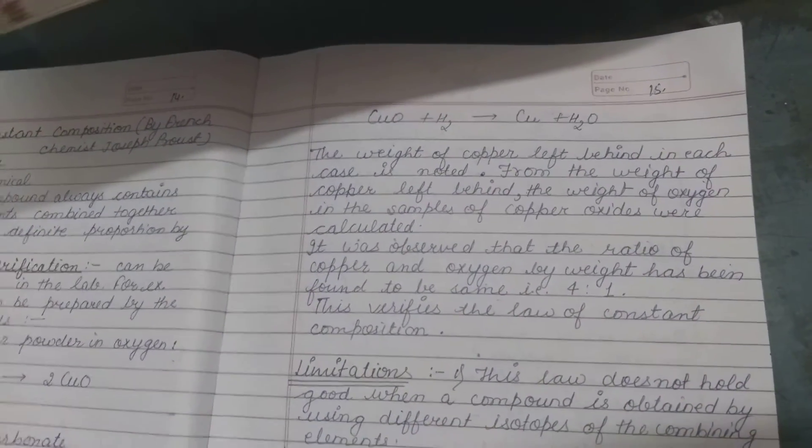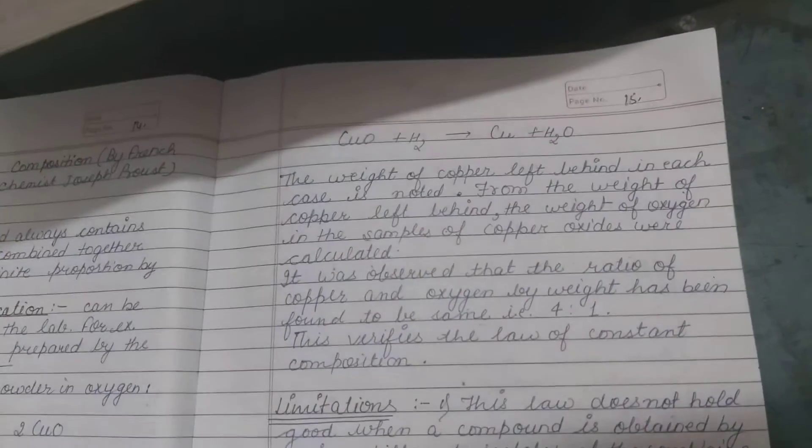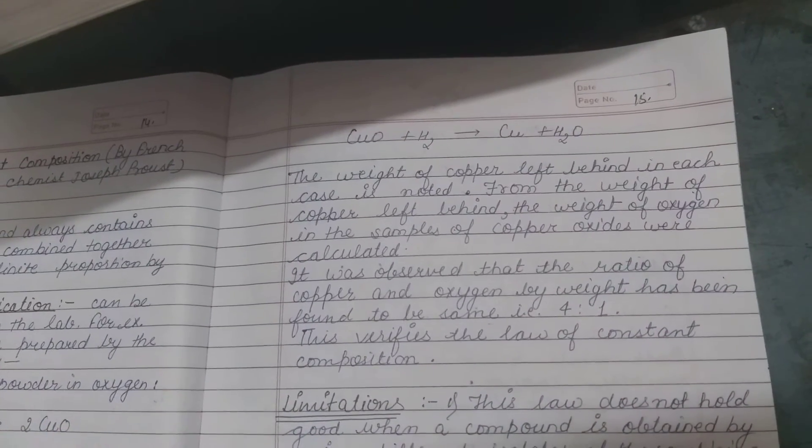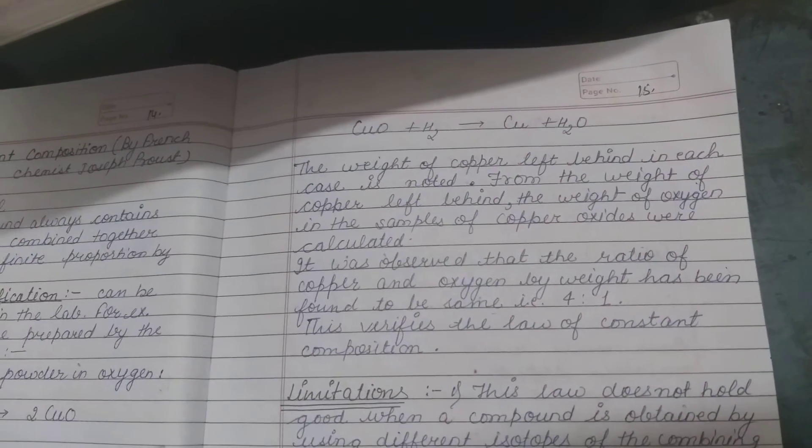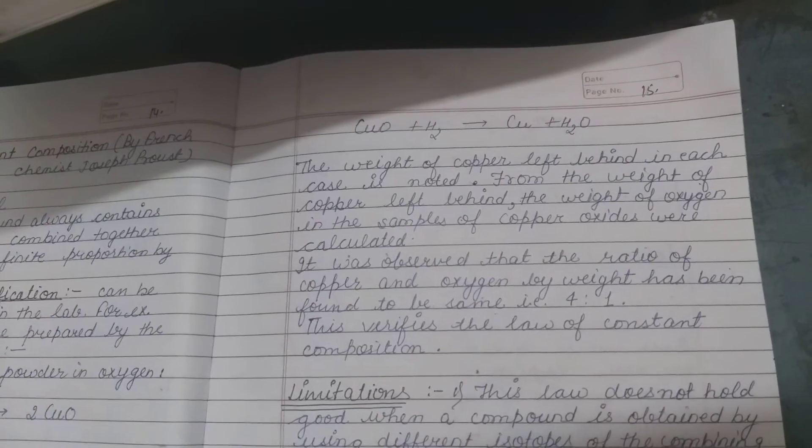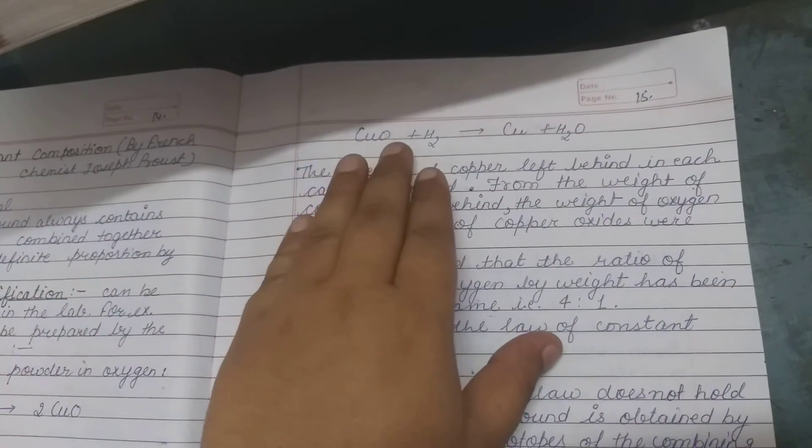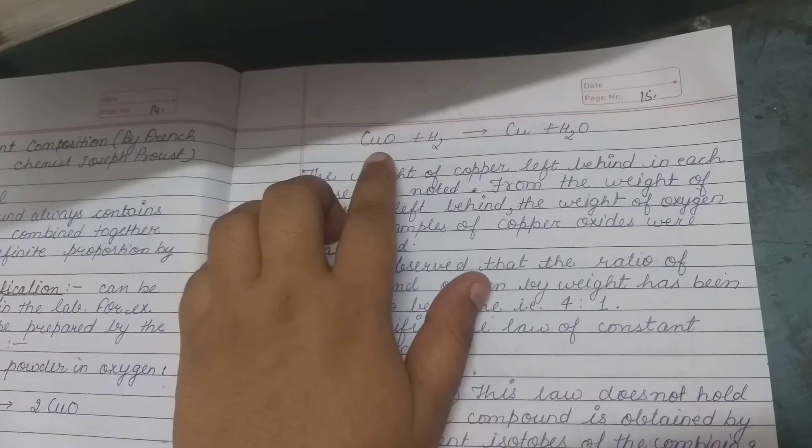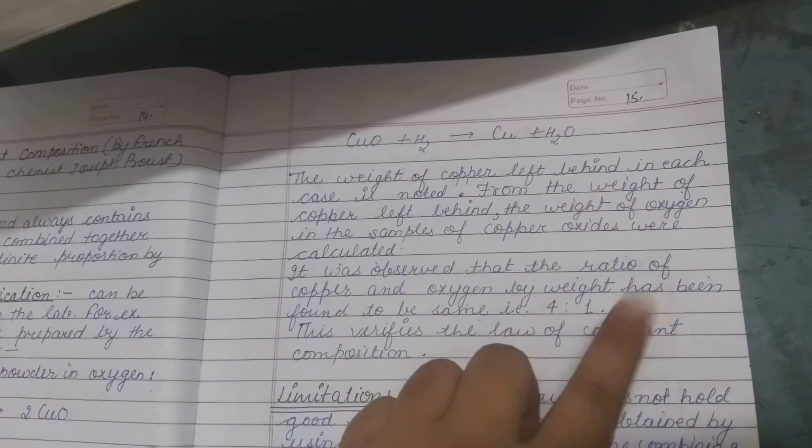This verifies the law of constant composition. Three samples of copper oxide from different methods all show the same ratio of copper to oxygen: 4 to 1. This shows that a pure chemical compound always contains the same elements in the same combining ratio.